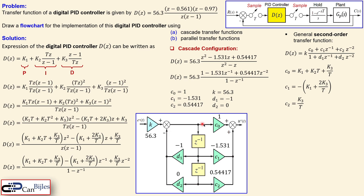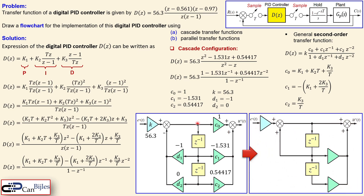Since d1 is −1, the negative feedback becomes effectively a plus one. The c0 coefficient is just a wire. Simplifying, this connection is just a wire, d2 is an open circuit so there is no connection, giving us the final simplified cascade flowchart with the remaining coefficient values shown.